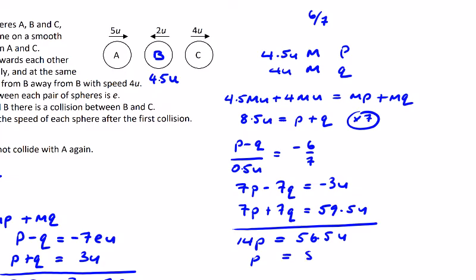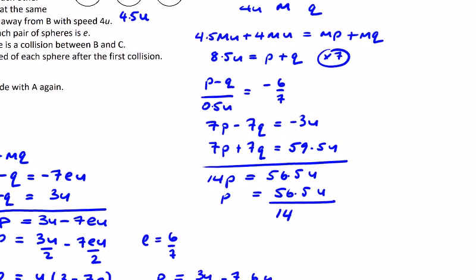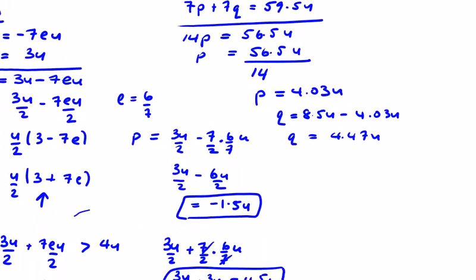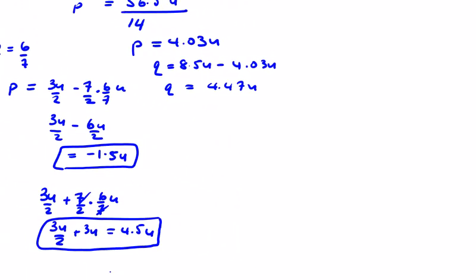So p is equal to 56.5u over 14. P equals 4.03u. Q from up here, q is equal to 8.5u minus p, so q is equal to 4.47u. These are still going in the positive direction. So we can say then that here's p, here's q, and here is ball A. The velocity of A is less than the velocity of p, which is less than the velocity of q.